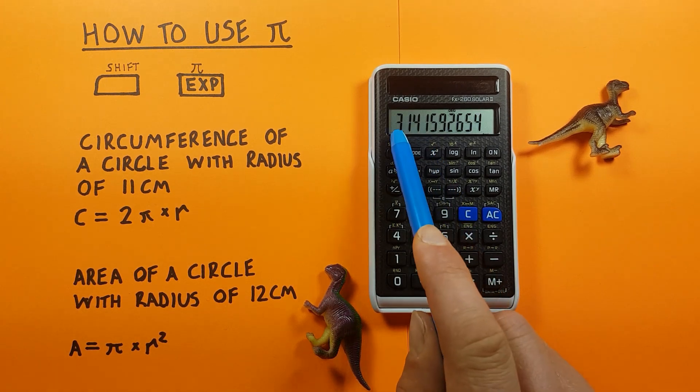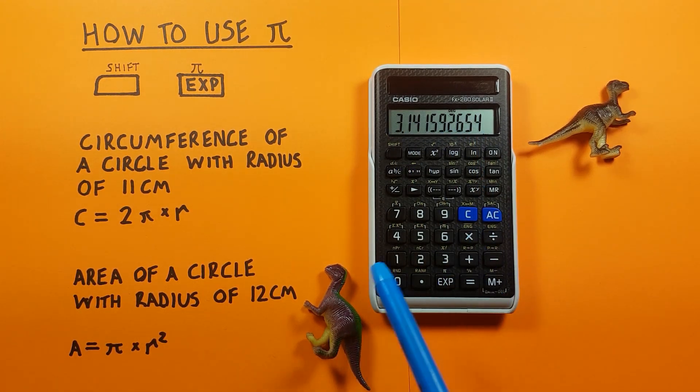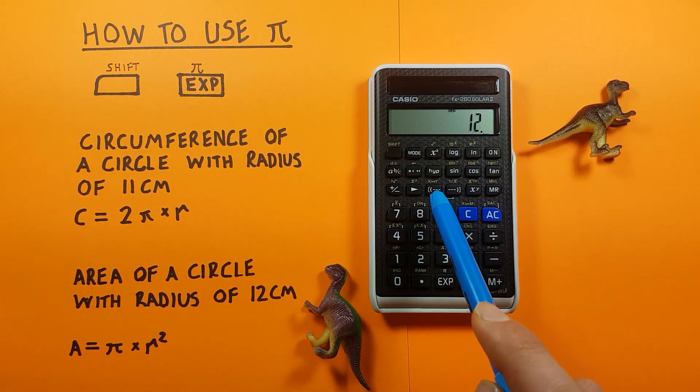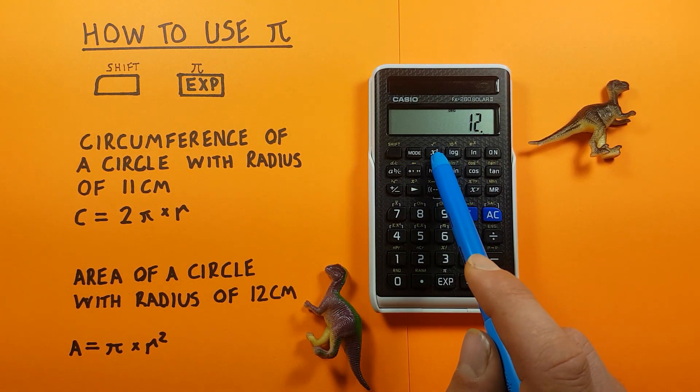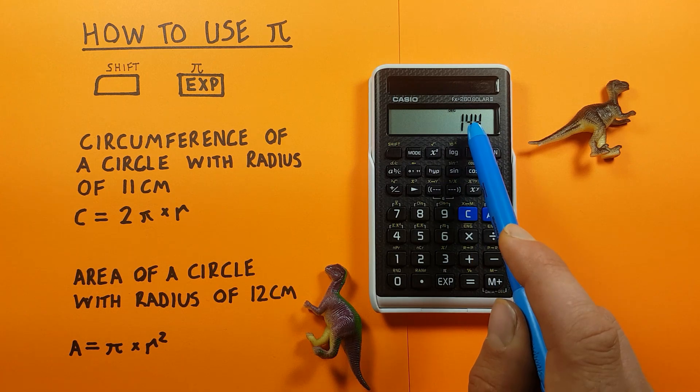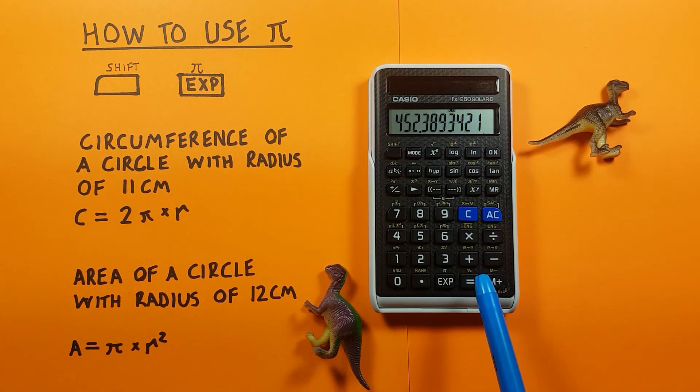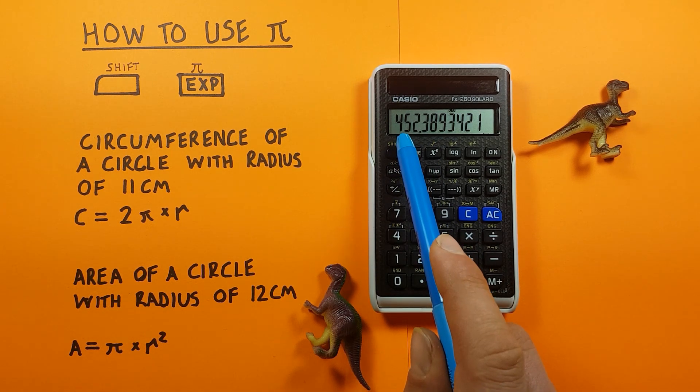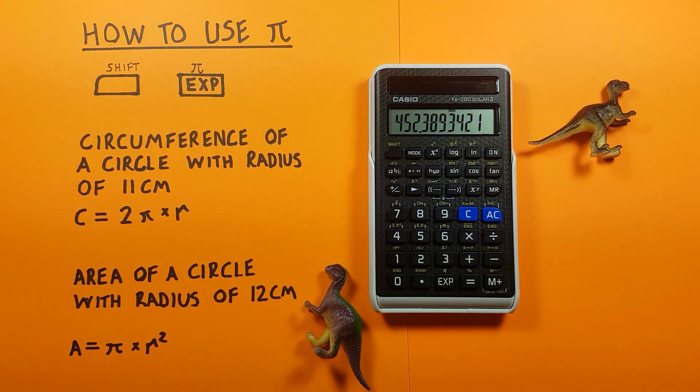Shift exp for Pi, times our R which was 12, and then remember we want to square this so we use this key here, the x squared key, and press equals and we get the result which is the area of our circle of 452.3893 etc.